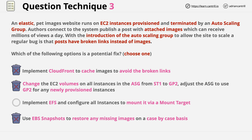Given that we already suspect all of the other answers are incorrect, it suggests that the third answer is right. It suggests using EFS and configuring all of the instances to mount it via a mount target. Think about what this is suggesting: it's a shared file system accessible across all EC2 instances — a file system which is persistent, meaning that data is stored there permanently and lives past the lifetime of the EC2 instances. The problem that the question details started after adding an auto-scaling group, and what an auto-scaling group does is add and remove instances.